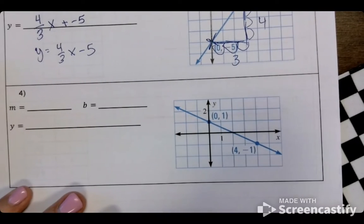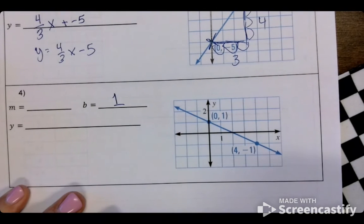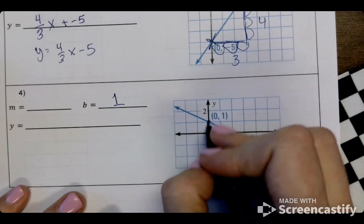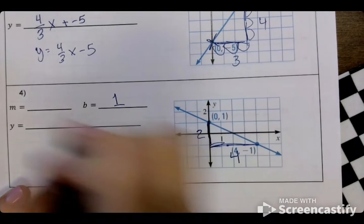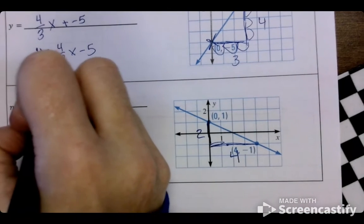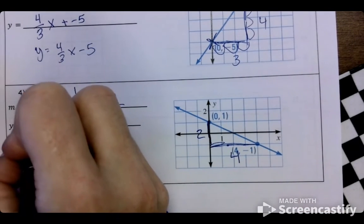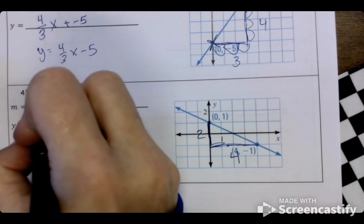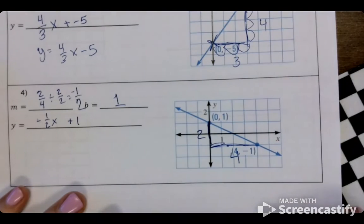For the second one, same thing. What is your b? 1. What is your slope? Good. You should have gotten up and down is 2. Left to right is 4. Which if you divide both of those by 2, gives you 1 over 2. And it is going down, so it's negative. So this is negative 1 half x plus 1. That's what you should have had.